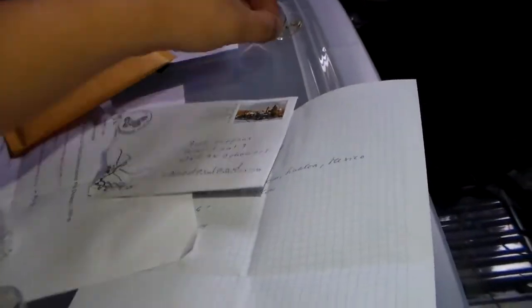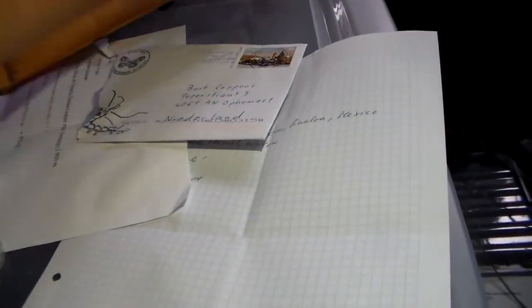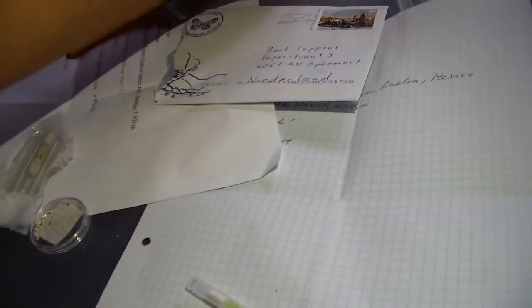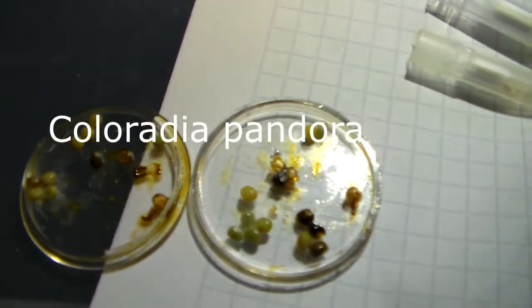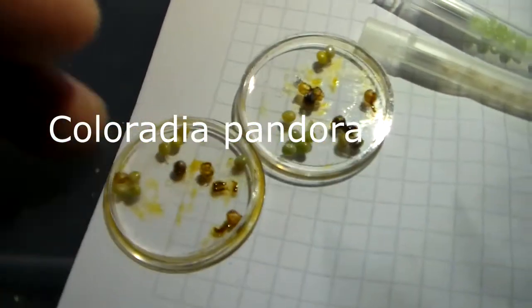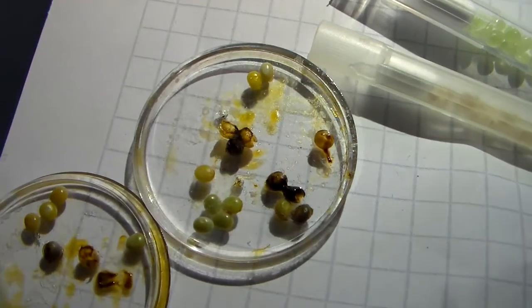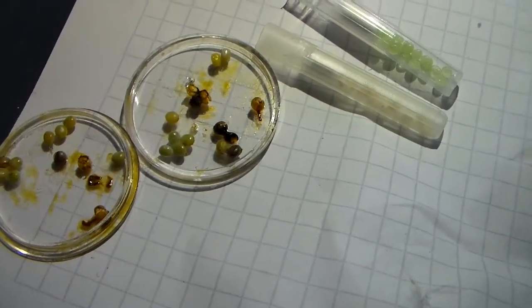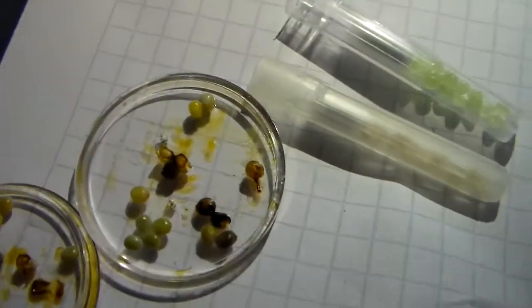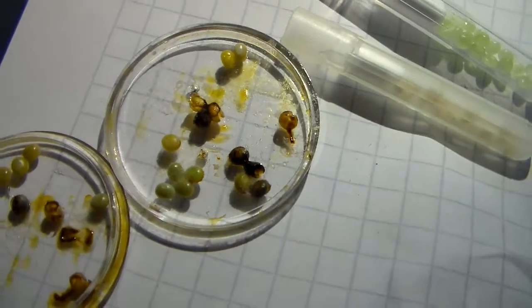And then we have some bad news. I also had some eggs coming of the species Coloralia pandora, but they arrived like this. I don't know what happened here - some eggs seem to have burst open, and there's a lot of slime in this container and even a little bit of mold.